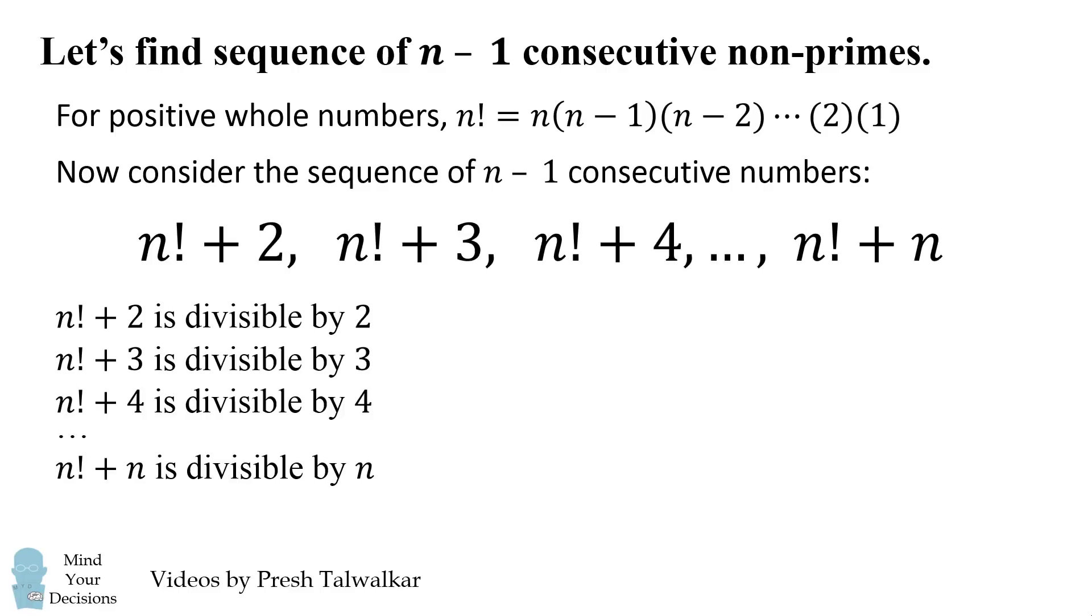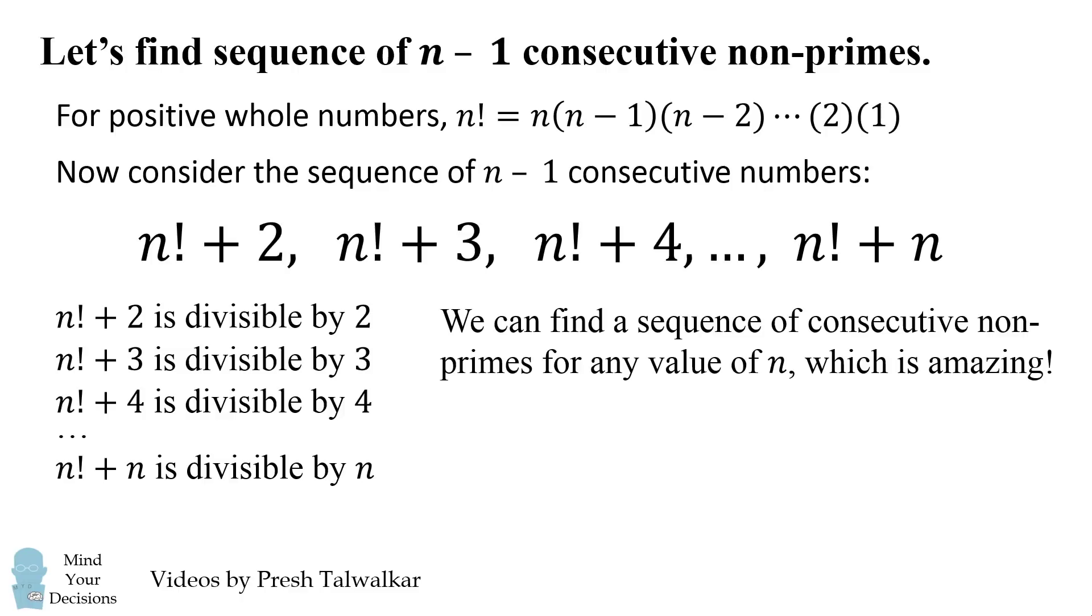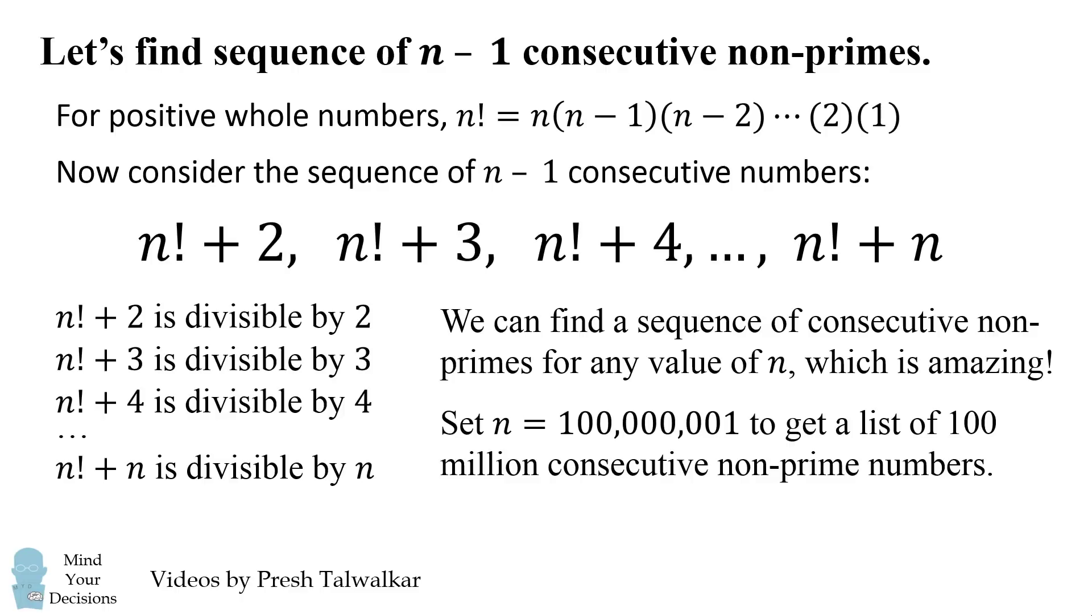Therefore, every single number in this list is not a prime. We can use this method to find a sequence of consecutive non-prime numbers for any value of n, which is amazing. Here we set n equal to 100 million and 1 to get a list of 100 million consecutive non-prime numbers.